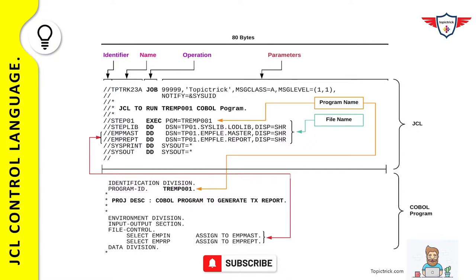The system will pick the load module from the specified library. After that, you have DD statements: EMPMAST for the employee master file (input) and EMPTREPT for the employee report (output). These file names correspond to those used in the COBOL program's FILE CONTROL section. The file EMP IN is mapped to EMPMAST in the JCL. Finally, SYSPRINT and SYSOUT are DD statements used to specify where to print job-related messages.